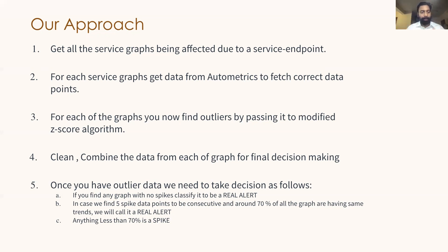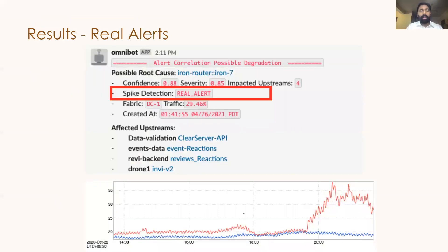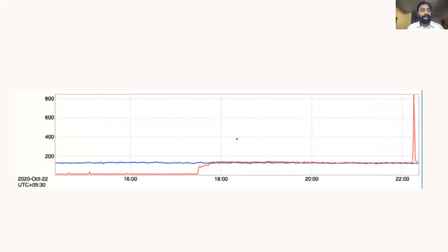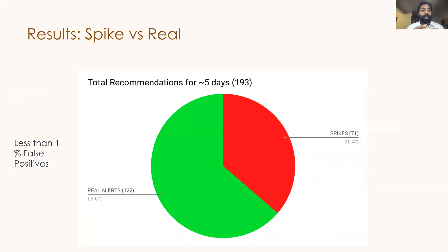When we implemented this we got very good results. We were able to identify real alerts — as you can see in the graphs — and we were also able to identify spikes for a particular service. Over a five-day observation period, we reduced overall toil by around 30 to 40 percent. We found that the percentage of spikes was almost 36 percent while real alerts were around 60 percent.